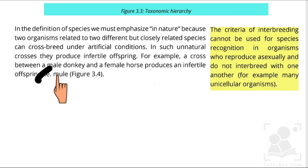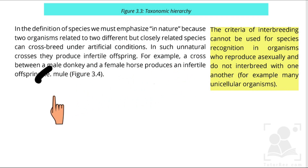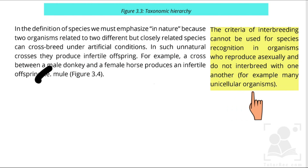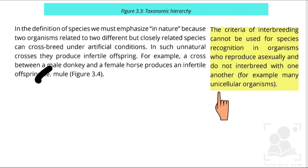For example, if you crossbreed a male donkey and a female horse, the offspring — a mule — is infertile. The criteria of interbreeding cannot be used for species recognition in organisms that reproduce asexually and do not interbreed with one another, such as many unicellular organisms. So the interbreeding concept as a criteria applies mainly to sexually reproducing animals.